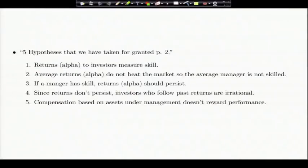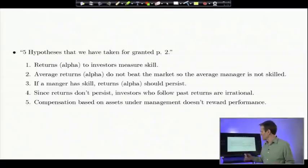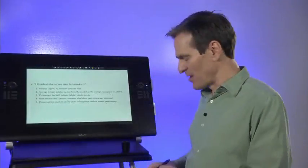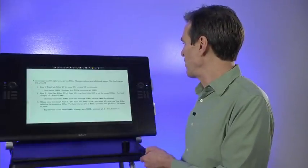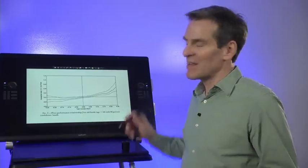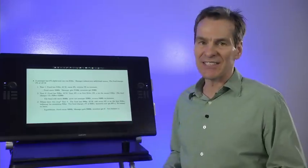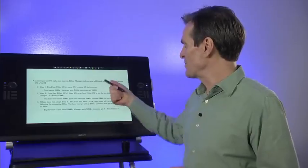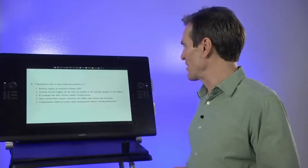Average returns don't beat the market, so the average manager is not skilled—but that's not true in this example. If the manager has skill, alpha should persist. That's what we've been looking for, yet that's not true here. The alpha to investors declines quickly to zero and stays at zero. Since returns don't persist, we've said investors who follow past returns are irrational. That was the charge with Chevalier-Ellison's graphs. Returns don't persist, so you're being nuts giving managers more money. Well, no. In this example, that's exactly the right thing to do. You give the manager more money in response to past returns, even though future returns will be disappointing.